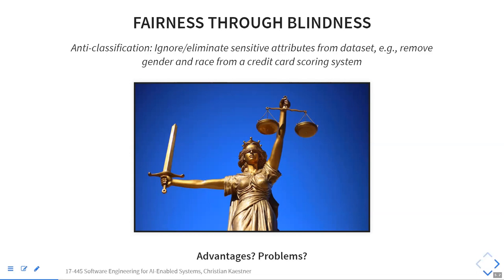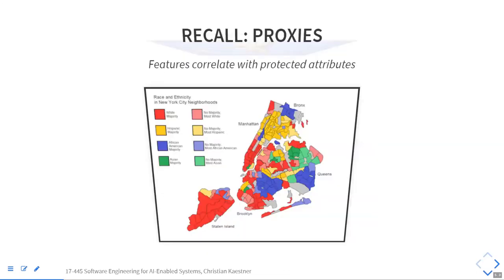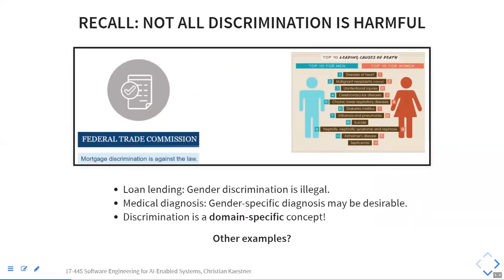It might conflict with tasks where you actually need the information because you want different outcomes for different people. Sometimes you actually want to use protected attributes because it's really important — you'd have unfair outcomes if you don't. In medical domains, it may actually make a difference whether you're treating men or women for certain kinds of diseases. Just hiding that attribute will not make the system better or fair in general.